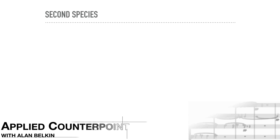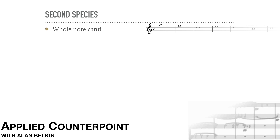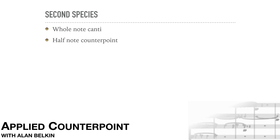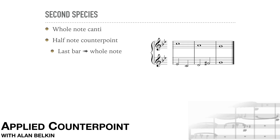Now let's get back to second species and take a closer look. While still using the same whole note cantus, the added part will now be in half notes. This means there will be two notes in the added part to one note in the cantus. The only bar where we use a whole note in the added part is at the end, since cadencing on a weak beat is less conclusive than stopping on the strong beat. The first note in every bar should be a consonance, as in first species.